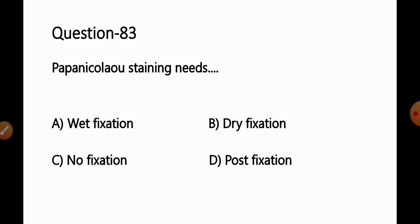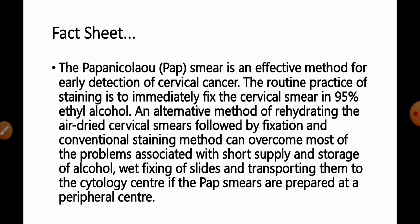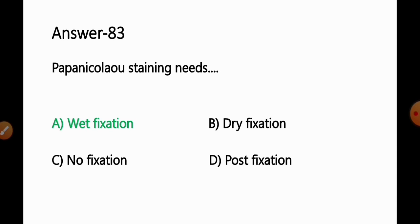Question No. 83: Papanicolaou staining requires — Option A: Wet fixation; B: Dry fixation; C: No fixation; D: Post fixation. The Pap smear is an effective method for early detection of cervical cancers. The routine practice is to immediately fix the cervical smear in 95% ethyl alcohol — a type of wet fixation. An alternative method involves rehydrating air-dried smears followed by fixation and conventional staining. So Option A — wet fixation — is the correct answer.